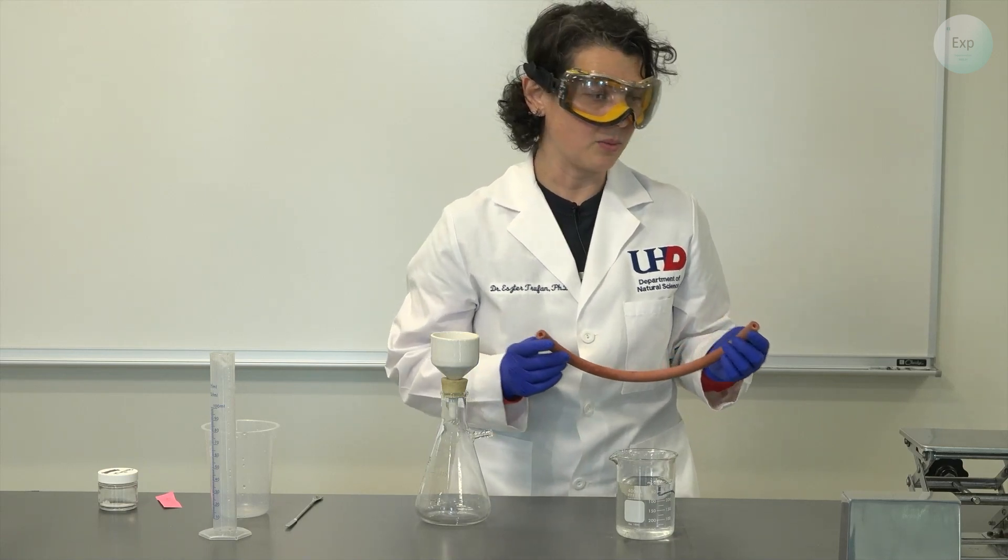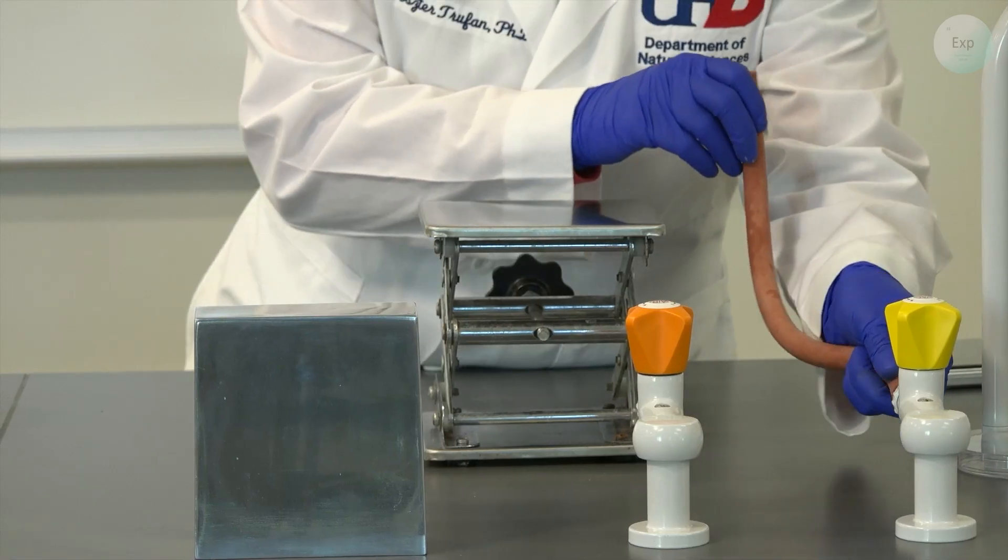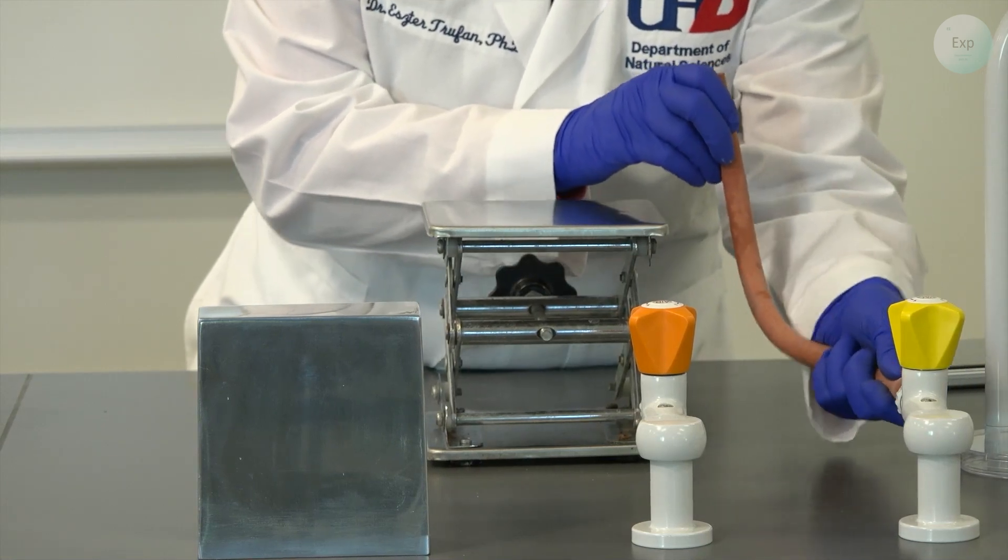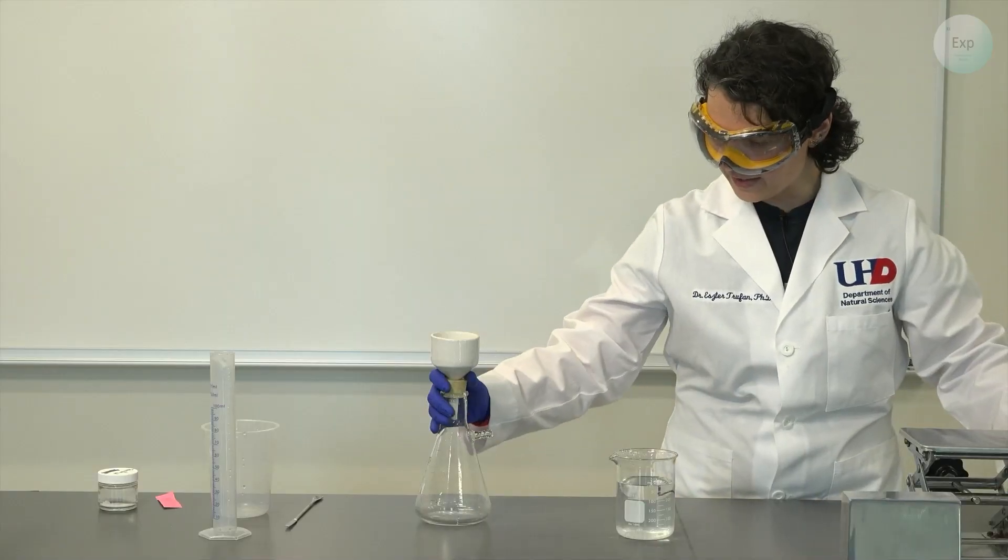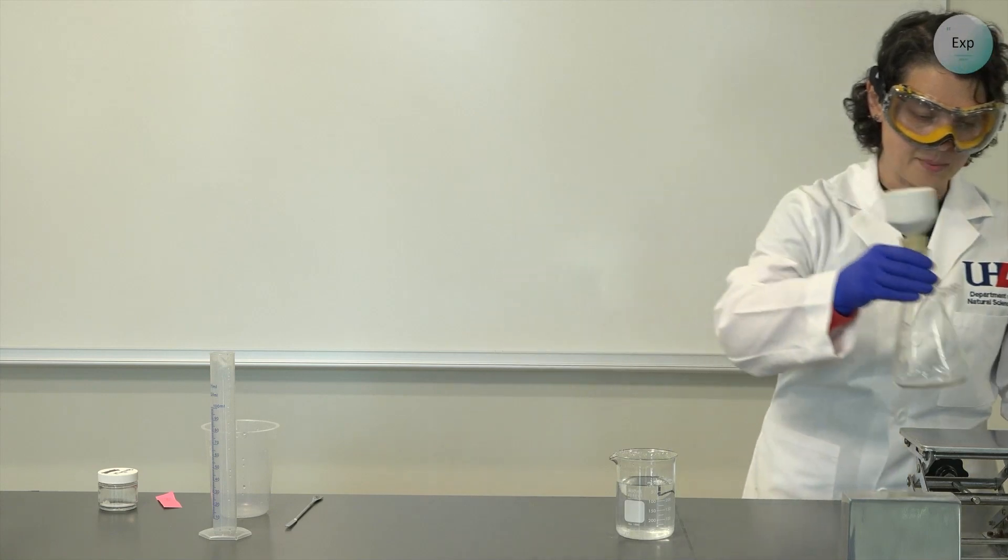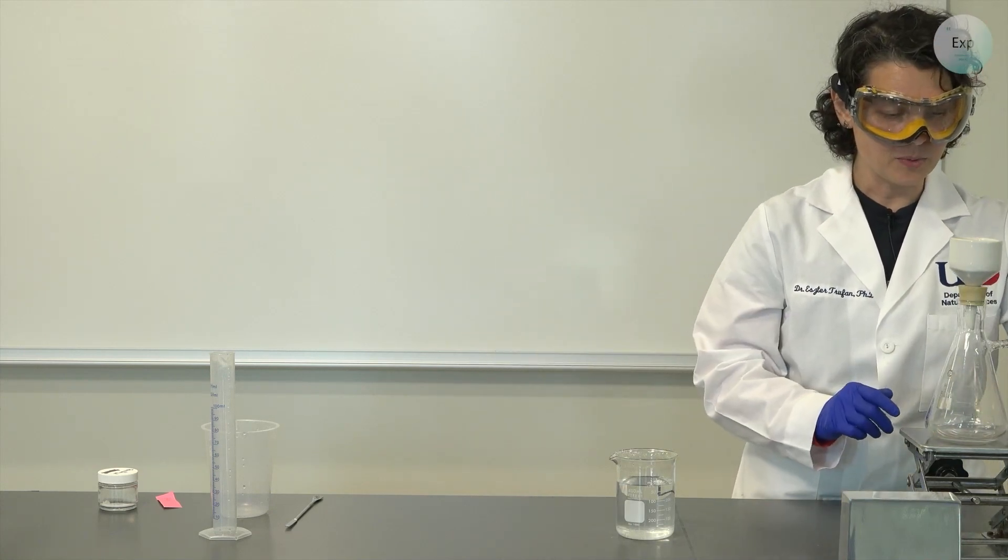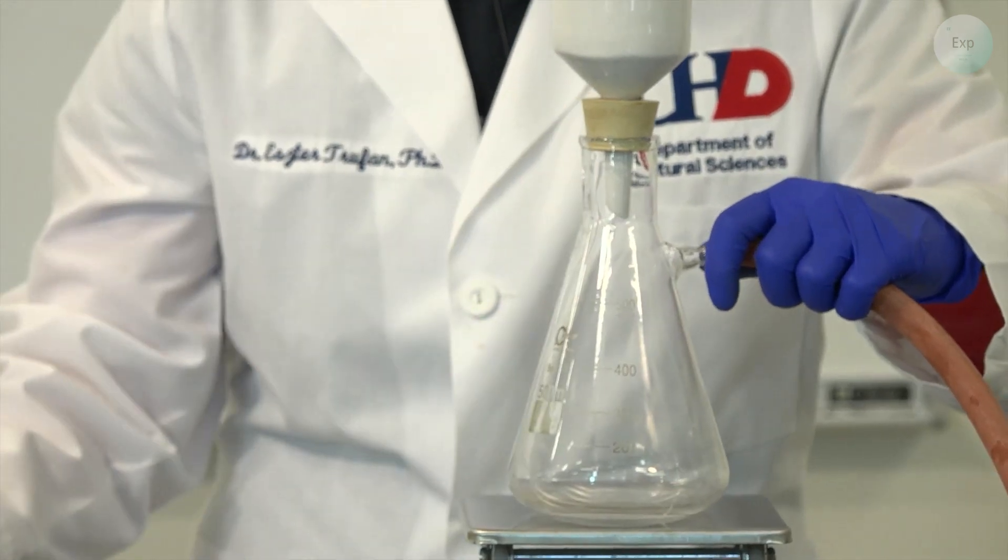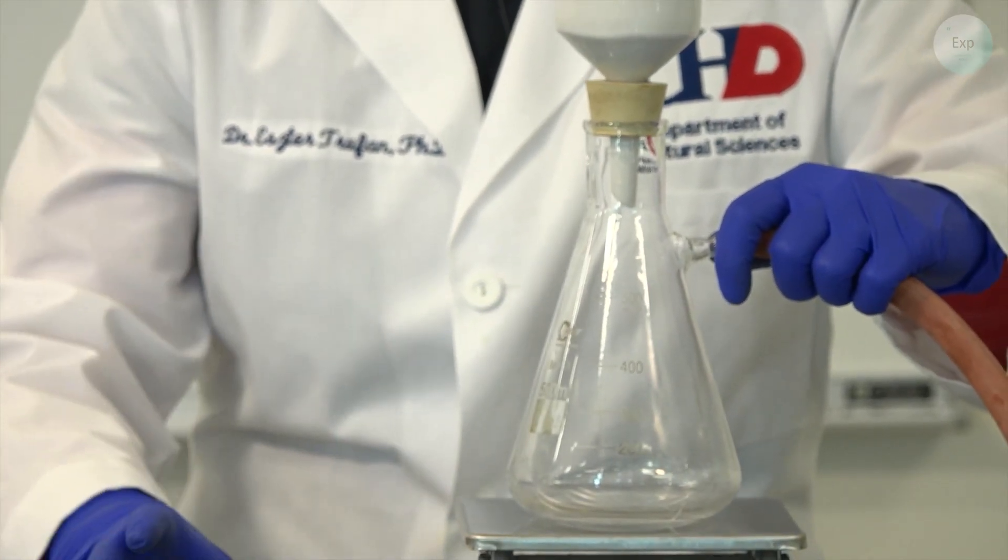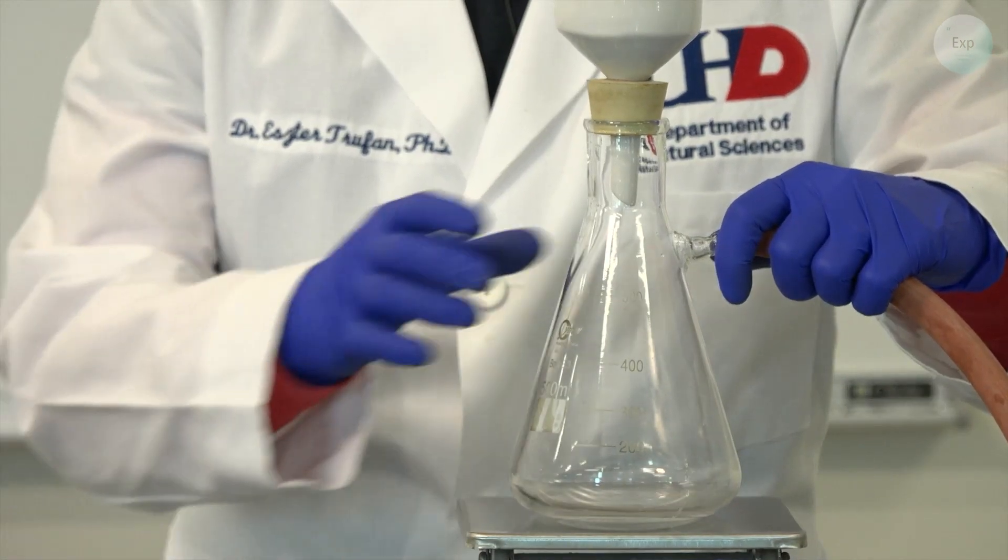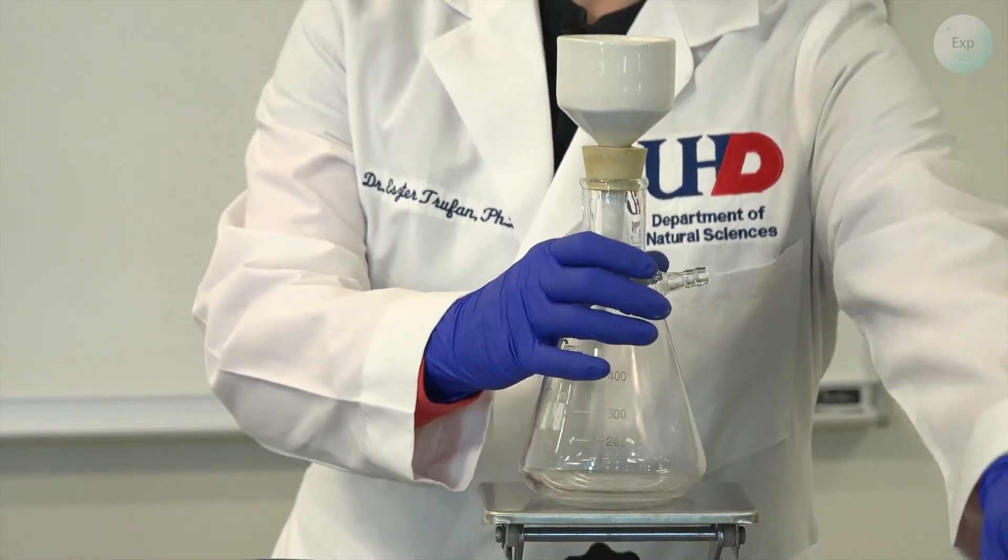I will place my vacuum filtration setup on top of a jack but you don't need to do that. I'm just placing it so it's more easily observable and then I will bring my alum saturated solution next to it. First thing I do, turn on my vacuum.